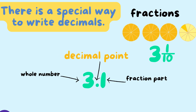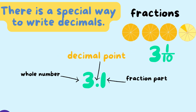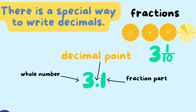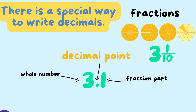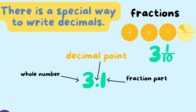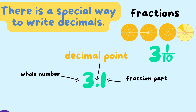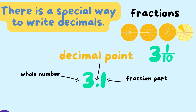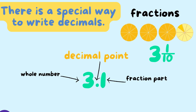Take a look at this example. We have three wholes and then one tenth. That fraction can be written as a decimal — it can be written as 3.1. So, three wholes, one decimal point, and then one tenth.